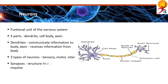There are three types of neurons: sensory, motor and interneurons. Sensory neurons carry messages from the sensory receptors to the central nervous system. Motor neurons transmit messages from the central nervous system to the muscles, and interneurons are found only in the central nervous system where they connect neuron to neuron.